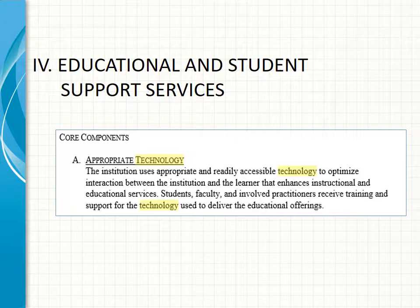DEAC's accreditation standards Section 4, Educational and Student Support Services, also addresses the use of technology. Core component Section A — Appropriate Technology — specifies that the institution must use technology that is appropriate and readily accessible to facilitate the most optimal interaction between the institution and the learner, in order to enhance the instructional and educational experience. It also specifies that students and faculty must be involved in training and support for the technology used to deliver educational offerings.